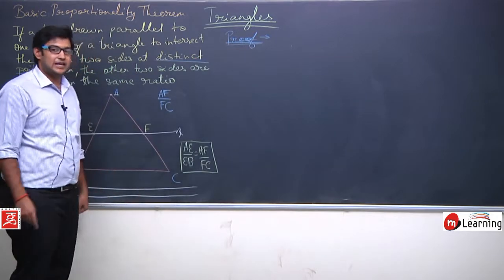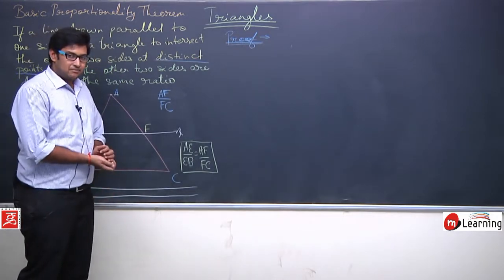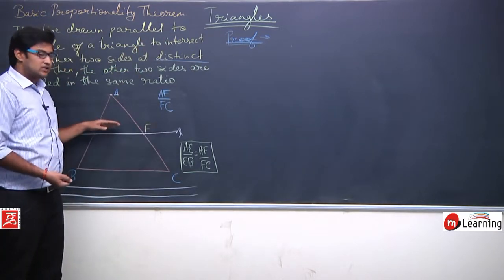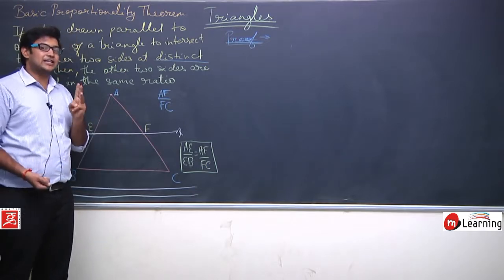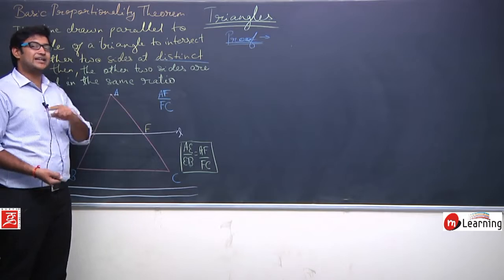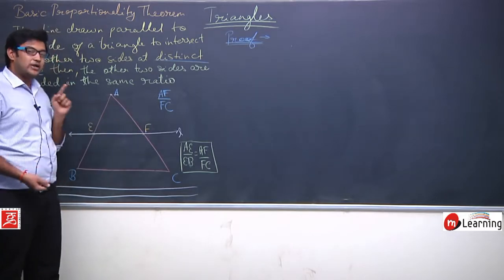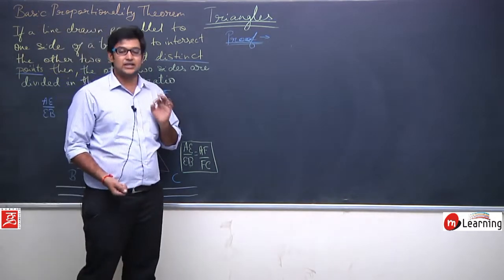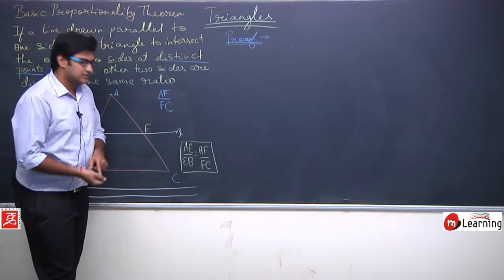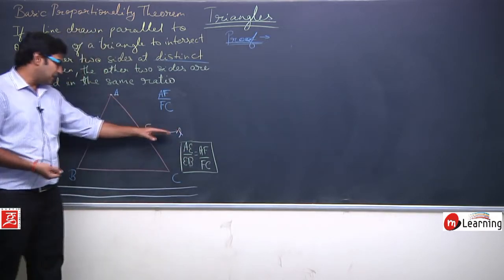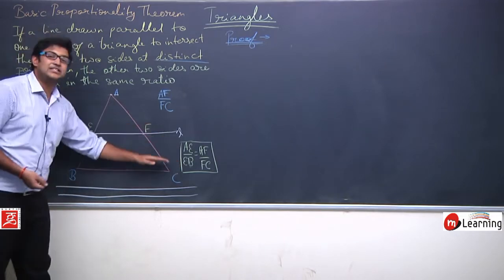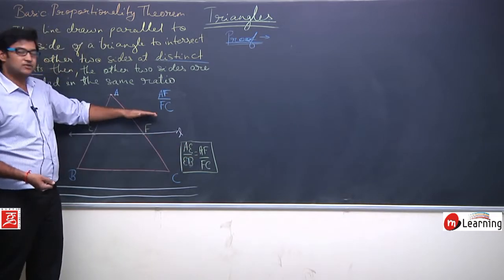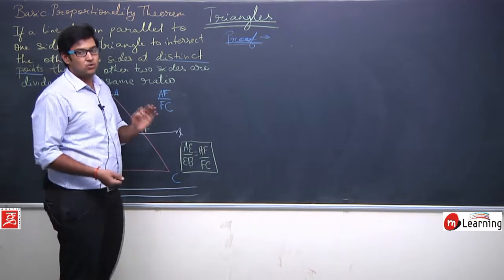Now we will learn how to prove this theorem — the derivation. To summarize: the Basic Proportionality Theorem says that if a line is drawn parallel to one side of a triangle, intersecting the other two sides at two distinct points, then the line divides those two sides in the same ratio. That is, AE/EB = AF/FC. This condition will always hold. Whether you shift the line up or down while keeping it parallel to BC, the division will always be proportional.